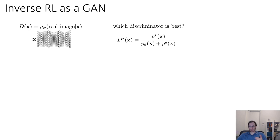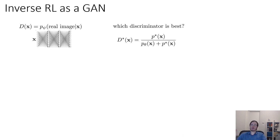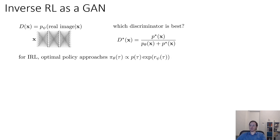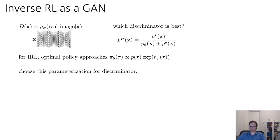As p_theta gets better and better, the discriminator will produce values other than 0 and 1. At convergence, when p_theta of x is actually equal to p*, you would expect the discriminator to produce probabilities that are always 0.5. We can use this inference to cast inverse RL as a kind of GAN with a very peculiar kind of discriminator. For IRL, the optimal policy is going to approach p_theta, which is proportional to p of tau times the exponential of R_psi of tau.